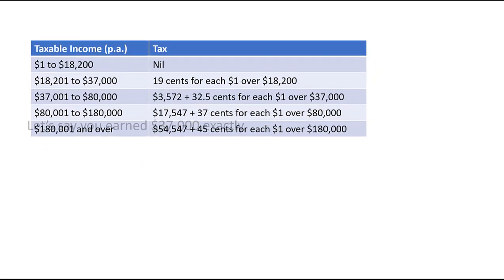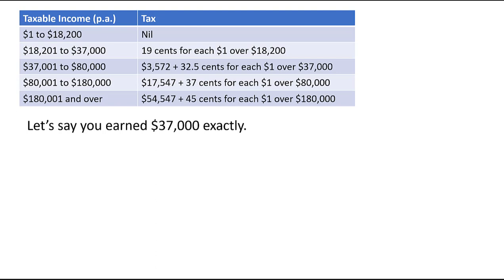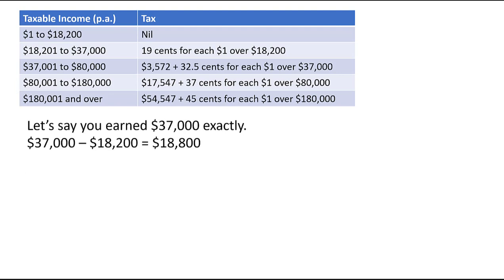Let's have a look at an example. Let's say you earned $37,000 exactly. That would put you in the tax bracket between $18,201 and $37,000. To work out how much tax you'd have to pay, you take away $18,200 from $37,000 to find how much you earned in excess of that threshold — in this case, $18,800.